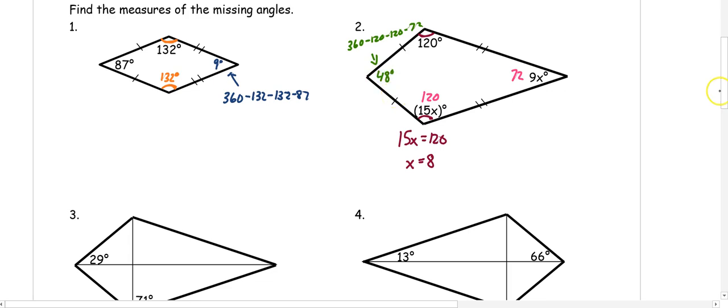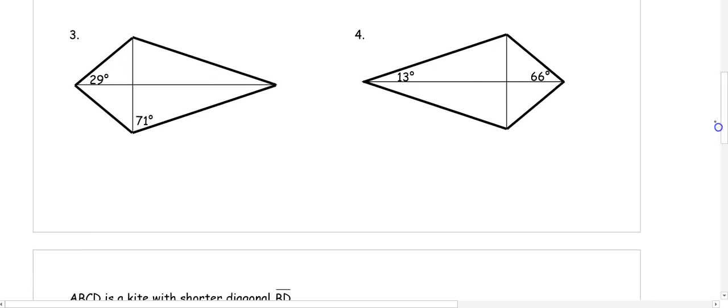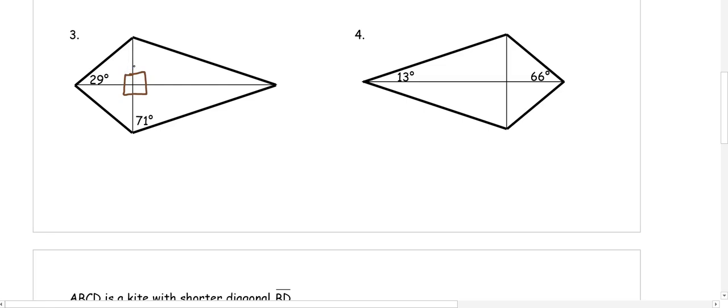For numbers 3 and 4, we have diagonals, so they're going to break up the angles. Remember that the angles in the center are 90° because our diagonals are perpendicular, so it creates four right triangles, two of which are going to be the same — two smaller triangles and two more stretched-out triangles. On the triangles on the left, the longer diagonal is bisecting this angle, so they're both 29°.